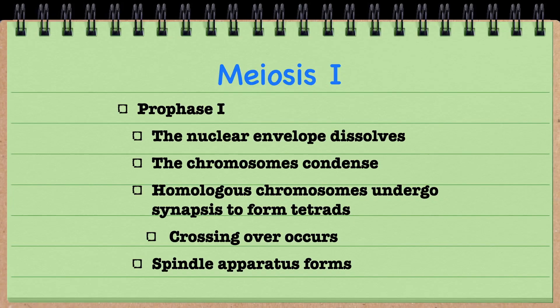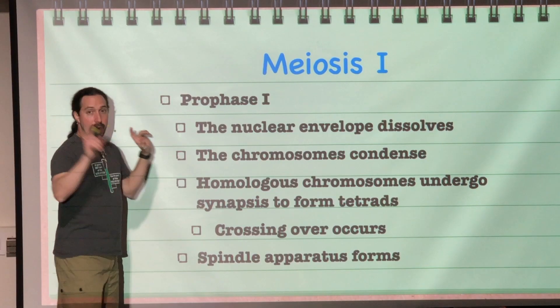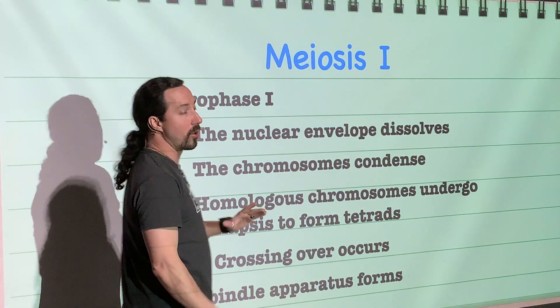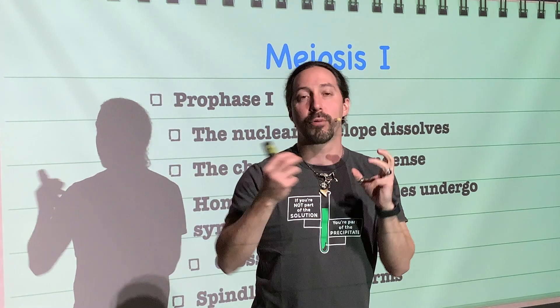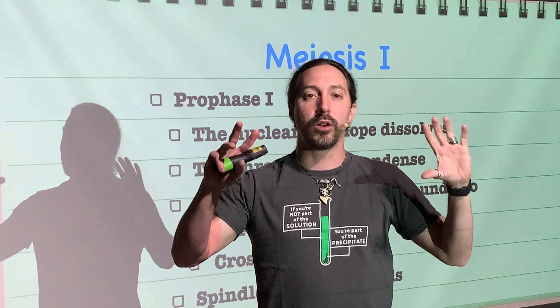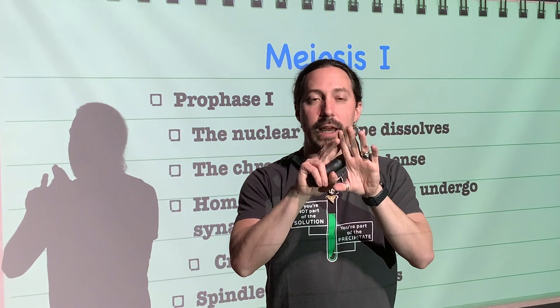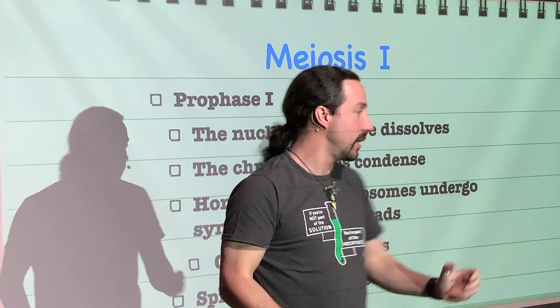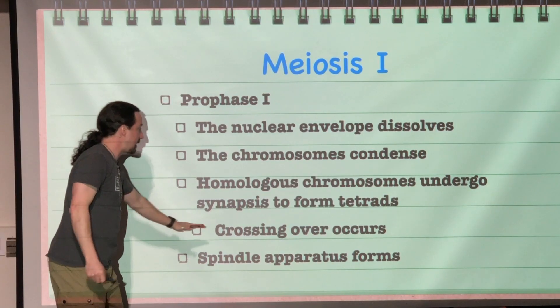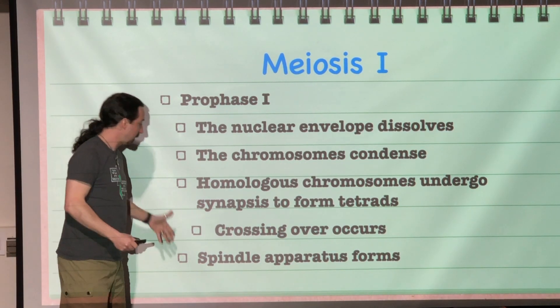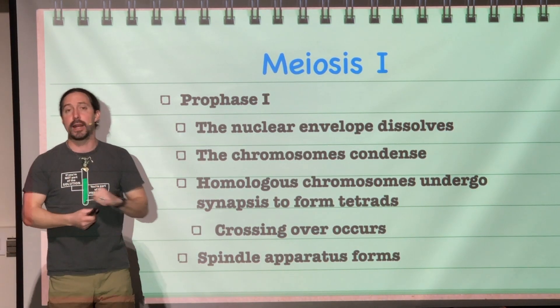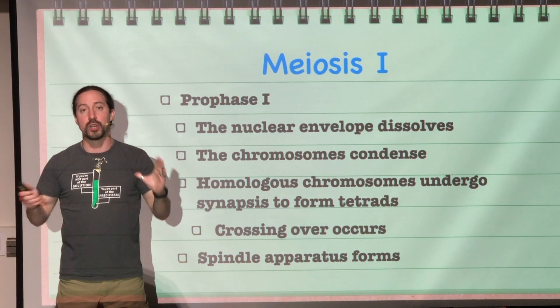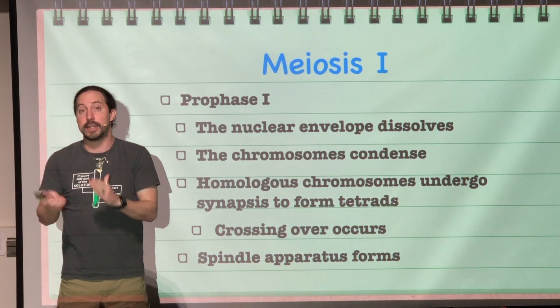Prophase I of meiosis I is where the nuclear envelope is going to dissolve and the chromosomes are going to condense. This is something new: the homologous chromosomes are going to undergo a process called synapsis, where they come together and form a joining between the homologous pairs. A process called crossing over is also going to occur. And lastly, our spindle apparatus is going to form so that chromosomes can get moved to where they need to go.